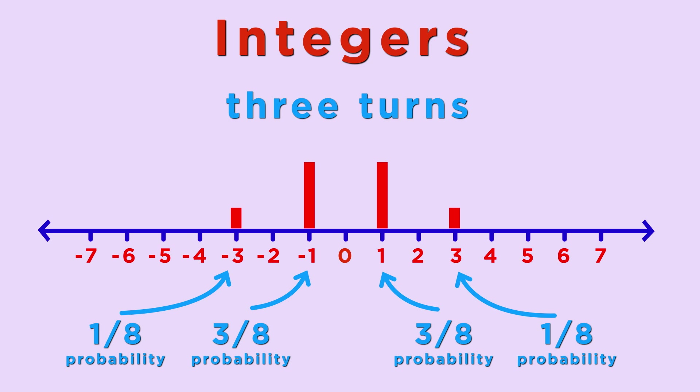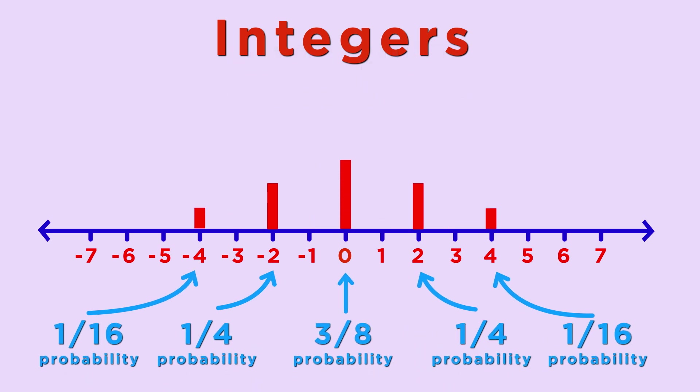Let's do it one more time. After four turns, the odds are one-sixteenth at minus four, one-sixteenth at plus four, one-quarter at minus two, one-quarter at plus two, and three-eighths at zero.